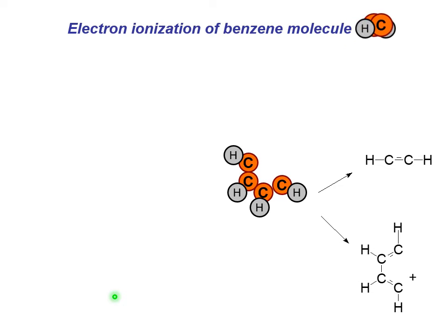We have fragments. Some of these fragments are neutral and we will never see them. Some of them are positive ions that will go towards the detector.